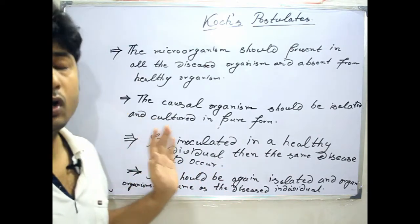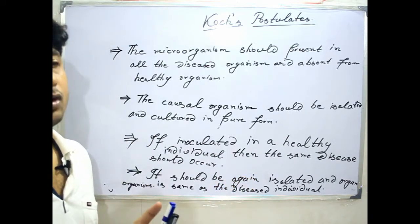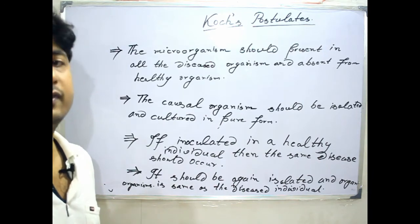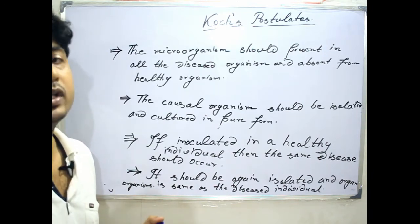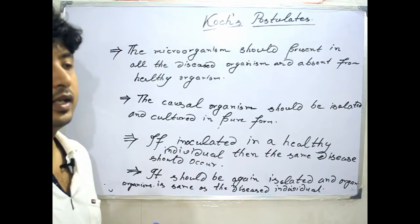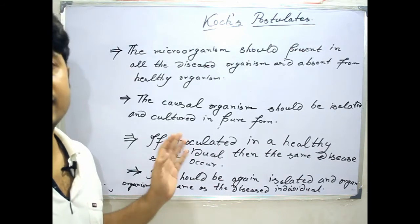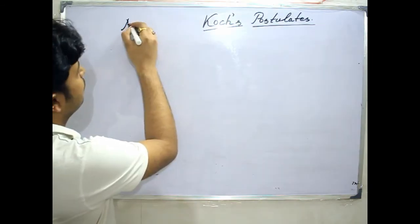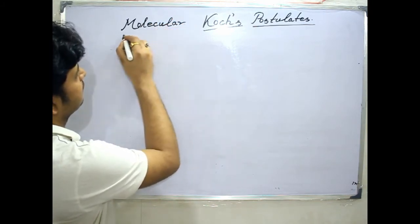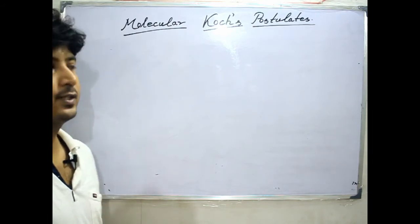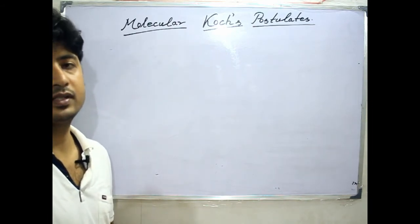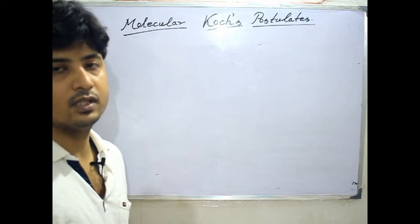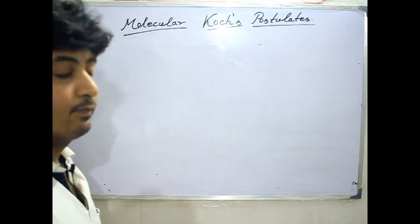However, Koch's postulate has some drawbacks. Not all disease-causing organisms can be cultured outside the human body — some can only cause disease when present within human beings and cannot be cultured in media outside the body. That is why molecular postulates were developed. These molecular postulates deal with the specific virulence gene which is genetically responsible for the disease, rather than requiring culture of the organism.